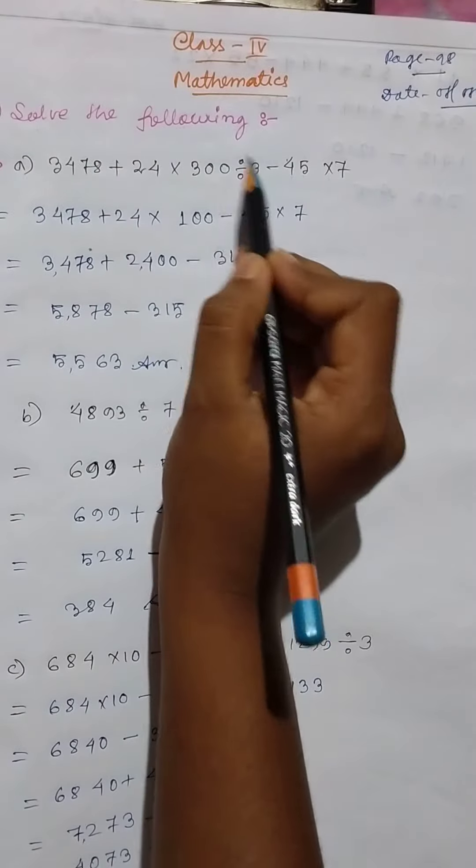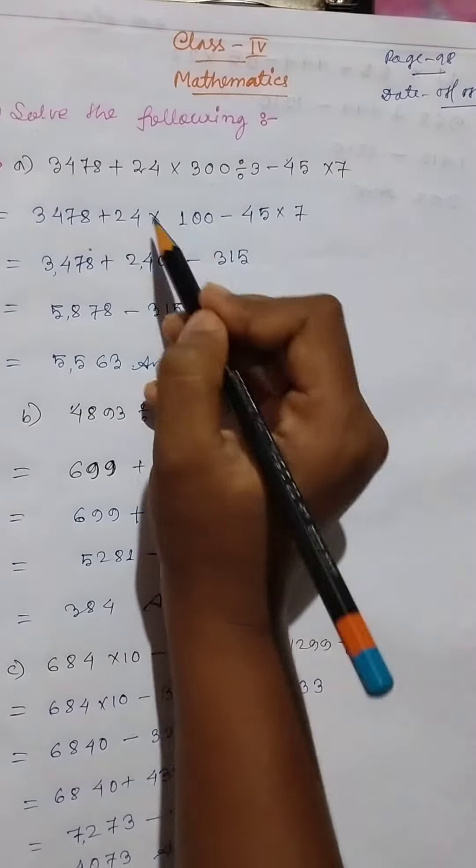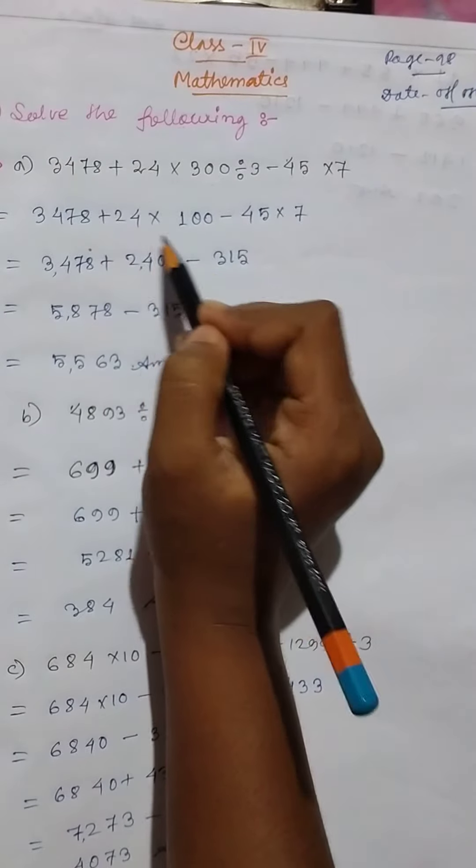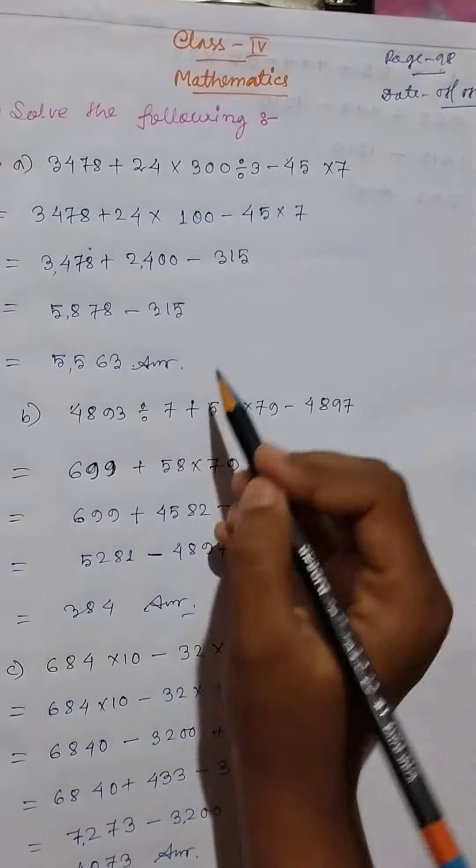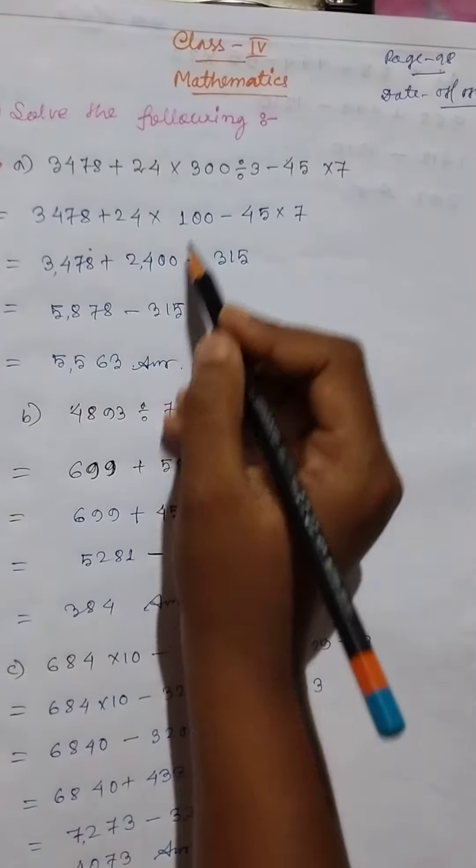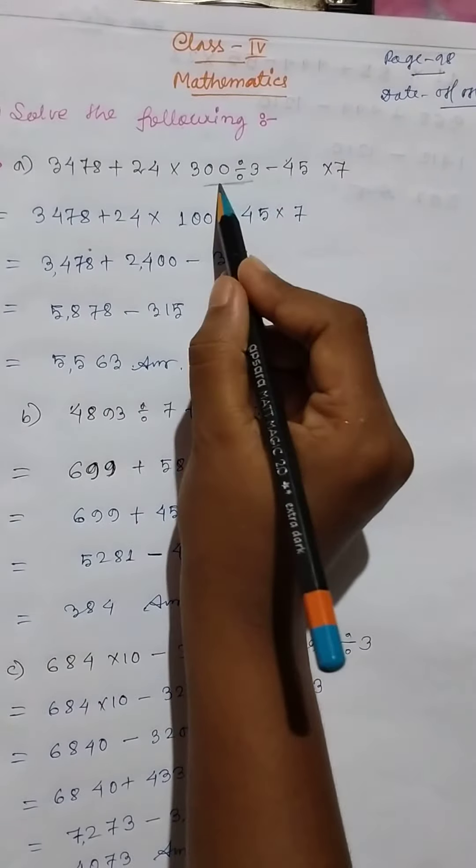First we solve division, then we do multiplication, then addition, and then last subtraction. So firstly here, everything remains the same, only division. We do division first.